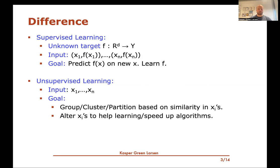In unsupervised learning, on the other hand, the input is just the feature vectors x1 to xn — there are no labels on the input. The goal might be, for instance in clustering, to group or cluster or partition these xi's based on similarities between these feature vectors. It could also be in embeddings, where we want to alter these feature vectors, maybe to help a learning algorithm or make it faster. So in unsupervised learning, we don't have labels.